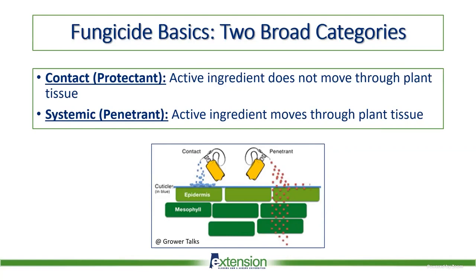There are two main types of fungicides in turfgrass management. You have contacts, which are considered protectants — they don't move through the plant tissue and just stay on the surface. Then you have systemics, which move through the plant tissue. There are different categories of systemics: some may just locally penetrate on the leaf blades, while others flow through the vascular tissue. It's important to know when to use a protectant versus a penetrant.